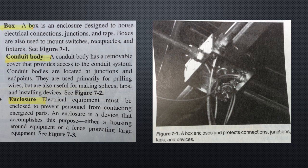The code requires all conductor joints, connections, taps, and splices to be housed inside approved enclosures. Boxes provide protection from both fire and shock. Article 314, outlet device, pull and junction boxes, conduit bodies, fittings and handhole enclosures contains the code rules in this area.